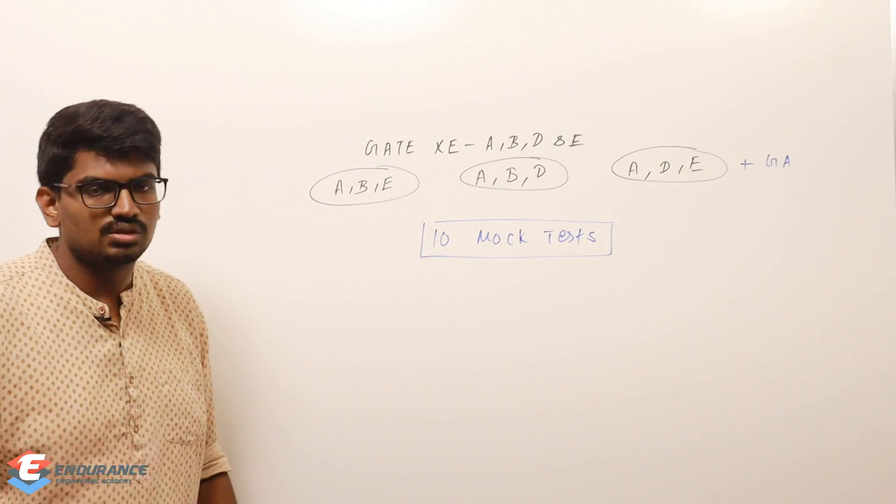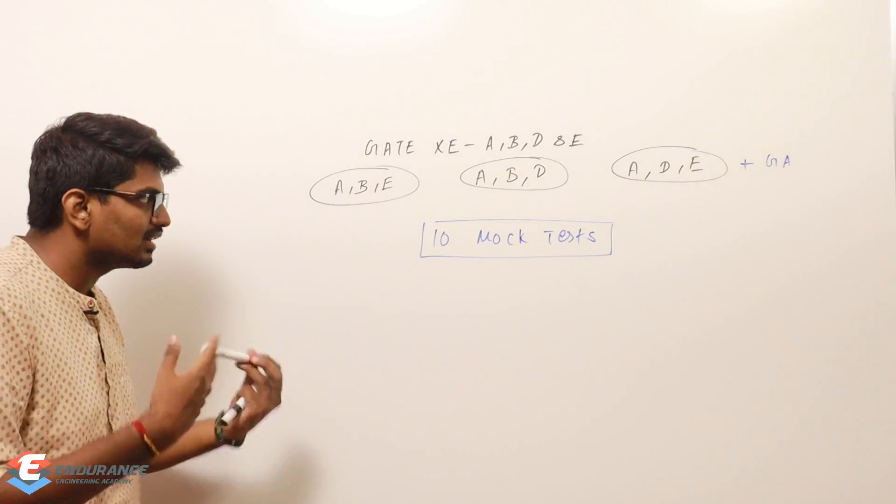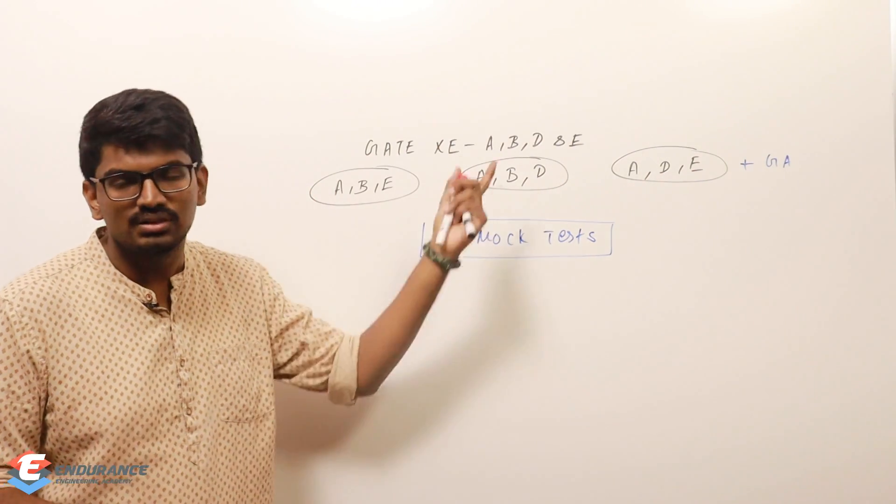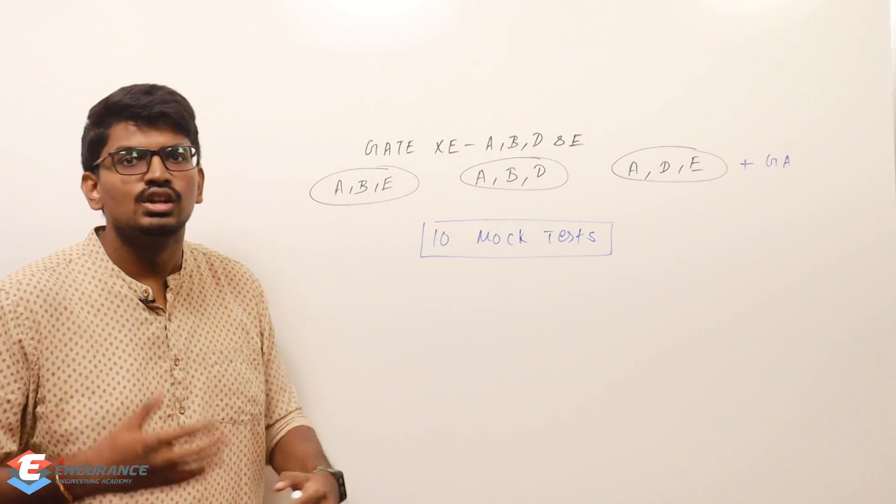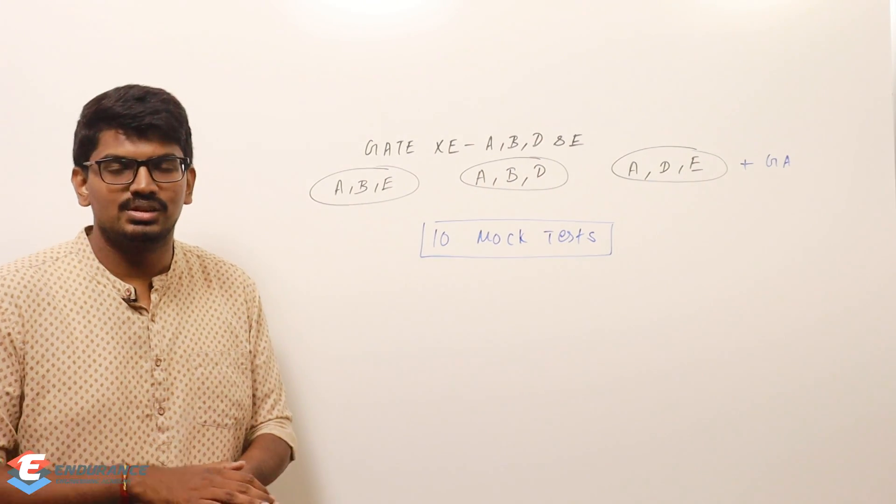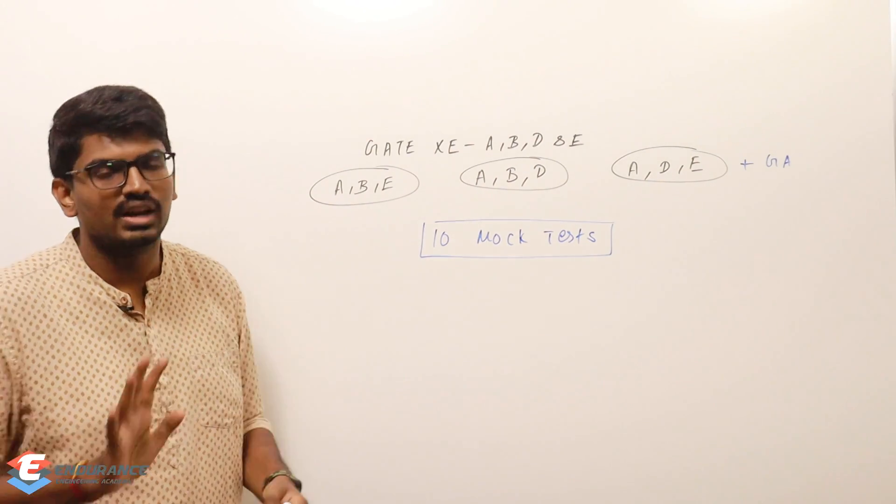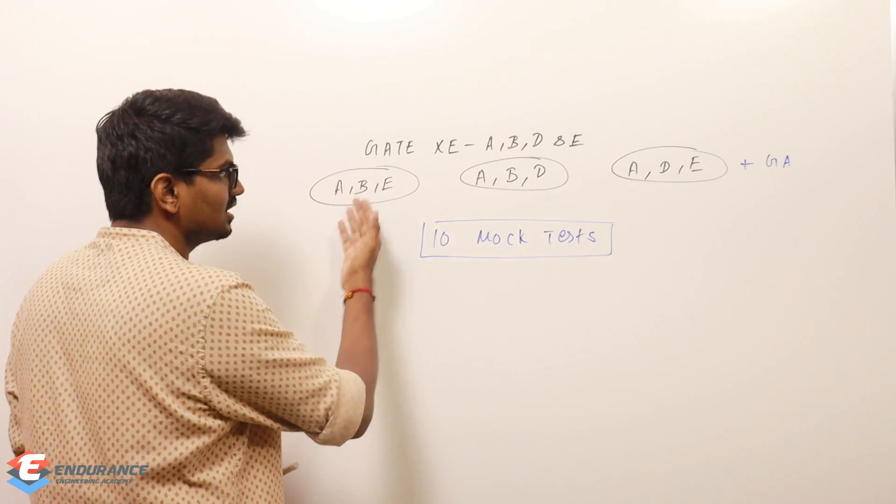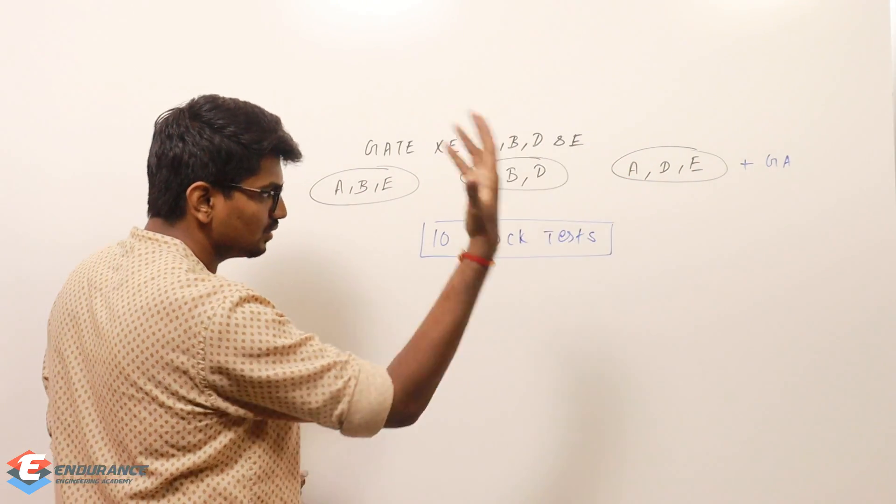Whichever combination you may be preparing for - BE, BD, or DE - it depends on what you want. Based on that, you can choose it. Totally 10 mock tests for each section. Whichever you want, you can choose it. The cost is going to be rupees 749.